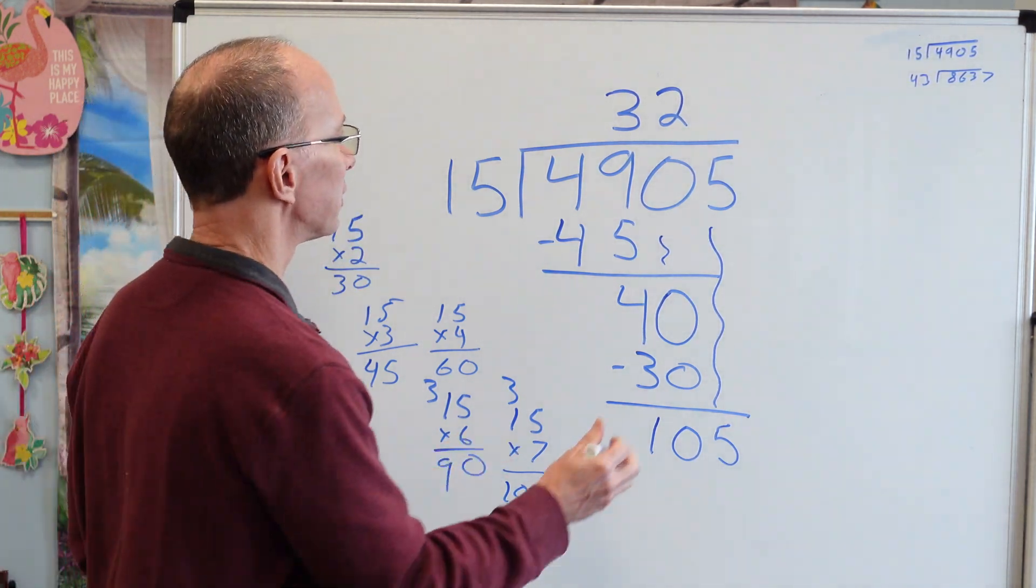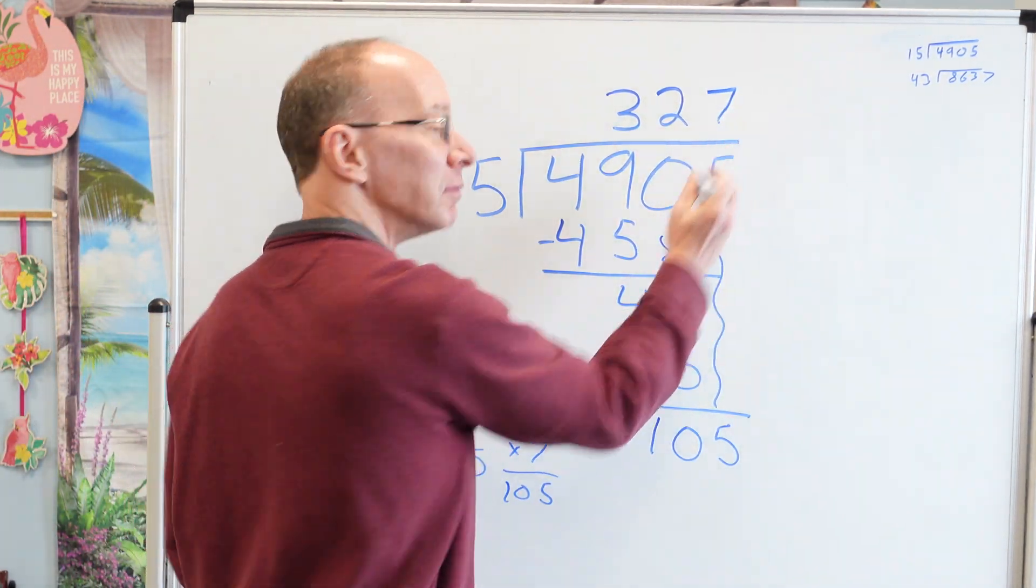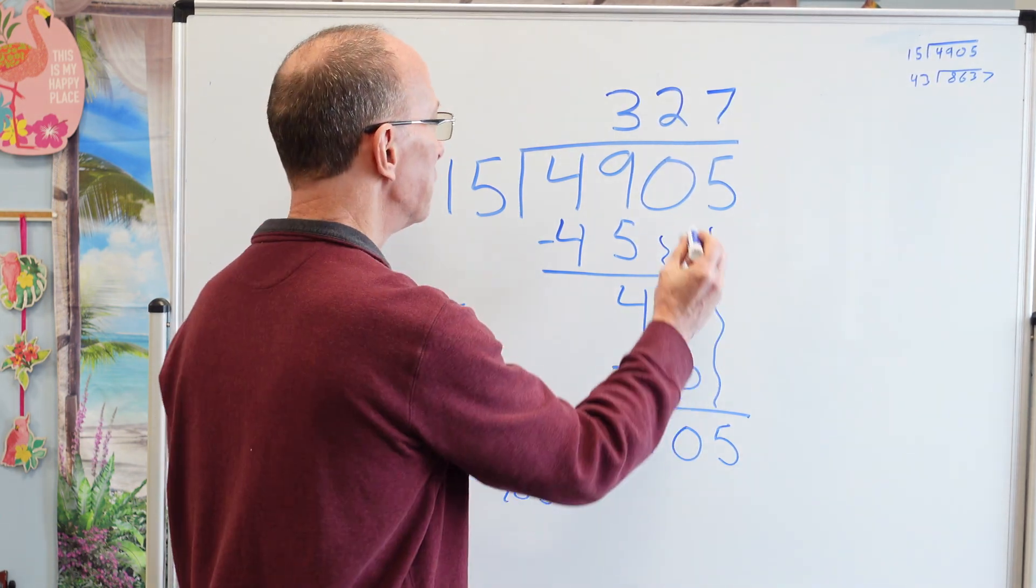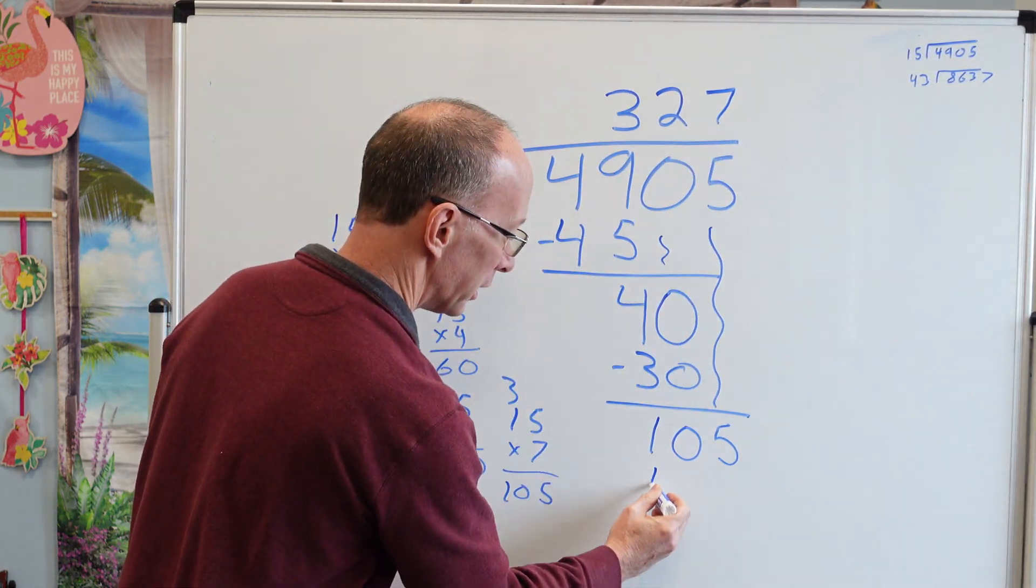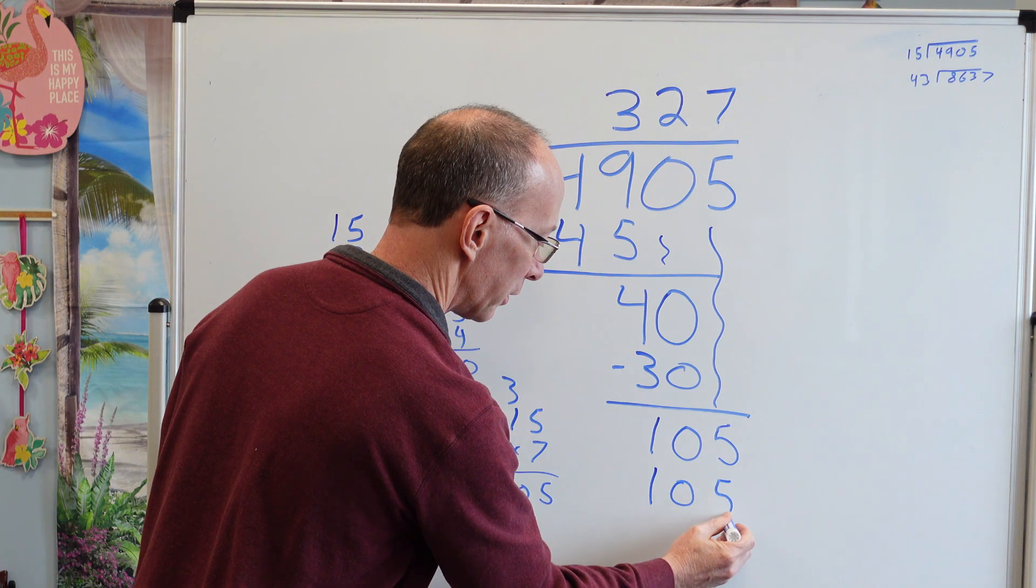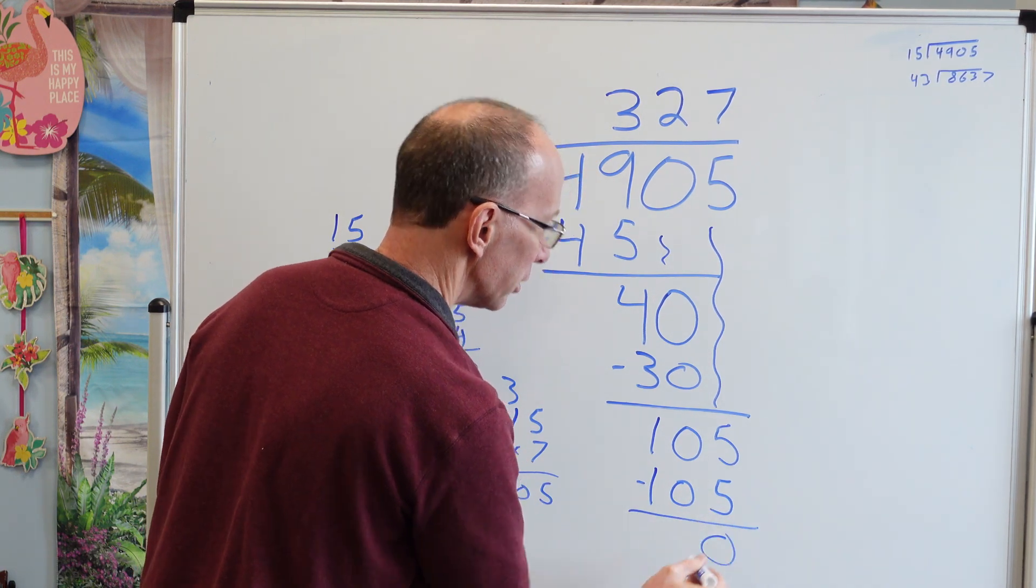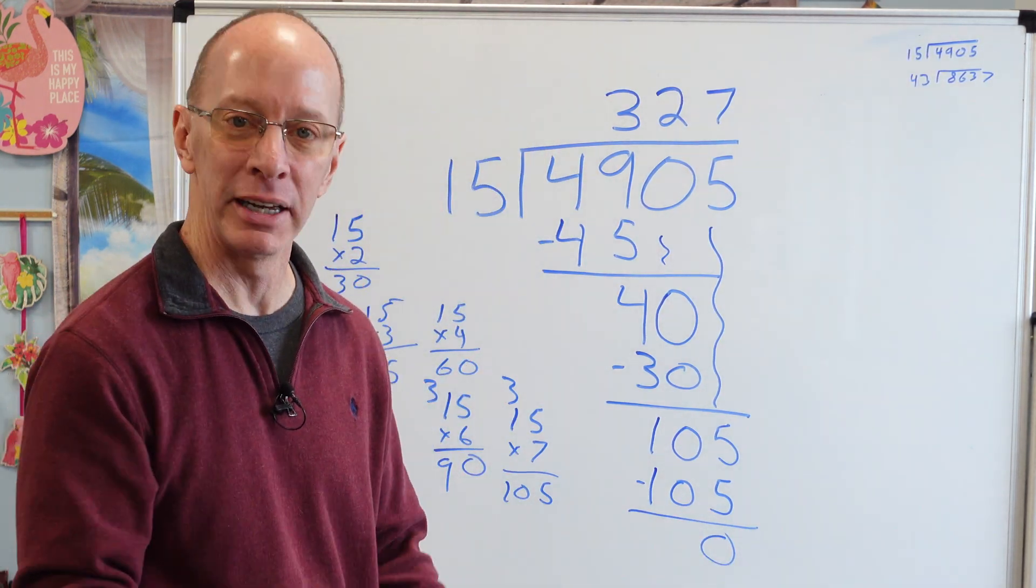So I put the 7 right up here. 7 sent from heaven. 7 times 15, 105. Subtract it. 0. Bada boom. Bada bing. We did it.